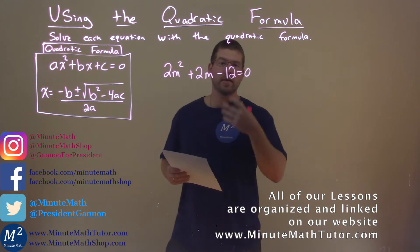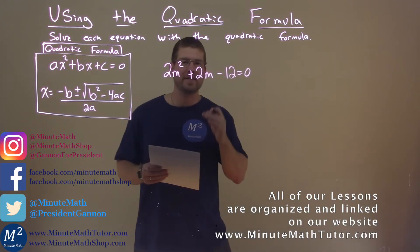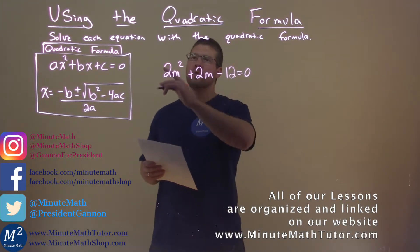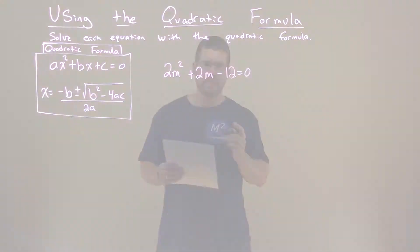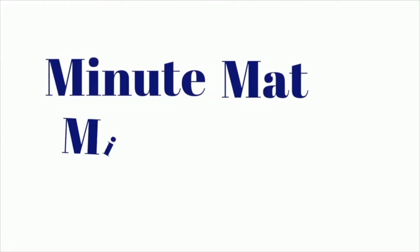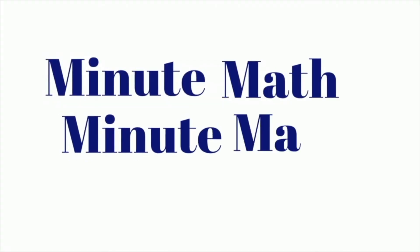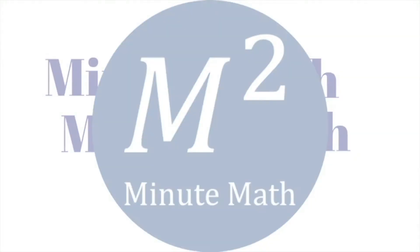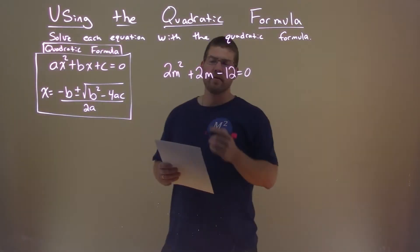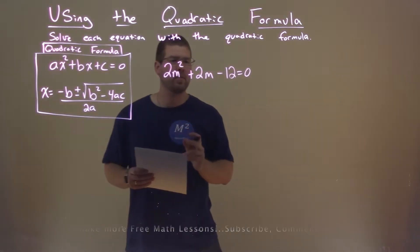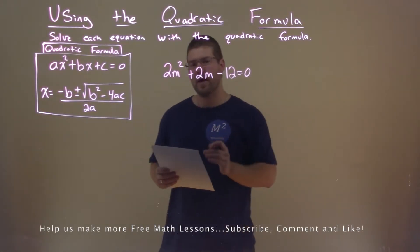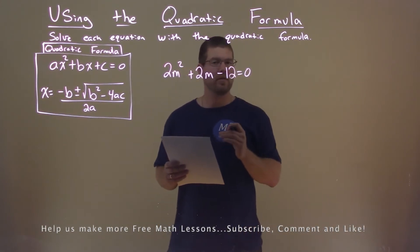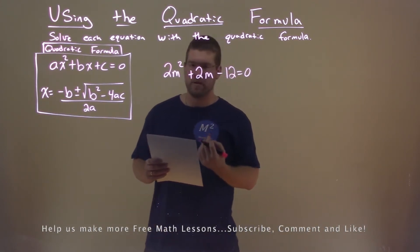Hi, I'm Sean Gannon, and this is Minute Math. Today we're learning about using the quadratic formula. We're given this problem right here: 2m squared plus 2m minus 12 equals 0, and we want to solve this using the quadratic formula.